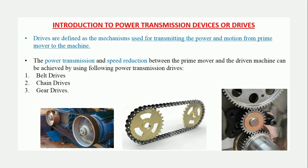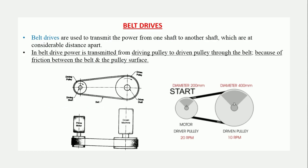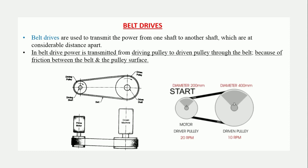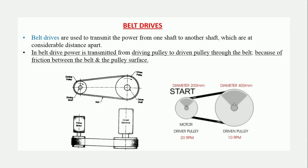Belt drives are used to transmit power from one shaft to another shaft that are at a considerable distance apart. Power is transmitted from the driving pulley, also called the head pulley, to the driven pulley, also called the tail pulley, by means of a belt. The power transmission happens simply because of friction between the belt and pulley.